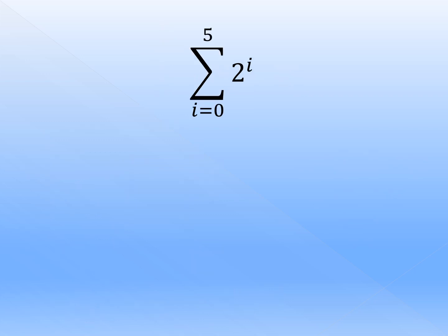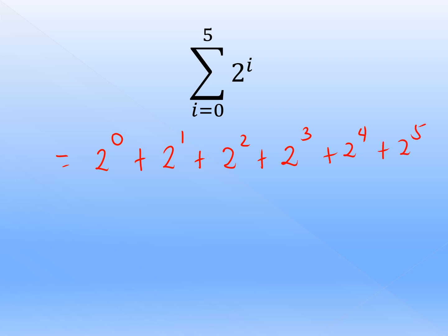How about when we have an exponent? For summation of 2 raised to i where i starts from 0 up to 5, we don't apply the first or second property. We just expand it: 2^0 plus 2^1 plus 2^2 plus 2^3 plus 2^4 plus 2^5. Simplifying: 1 plus 2 plus 4 plus 8 plus 16 plus 32. Adding: 1 plus 2 is 3, plus 4 is 7, plus 8 is 15, plus 16 is 31, plus 32 gives 63.